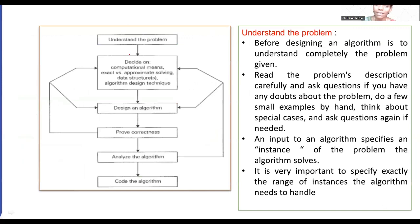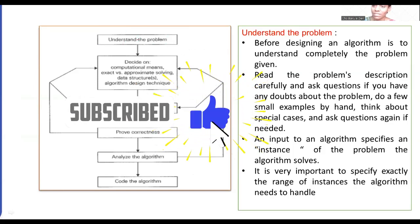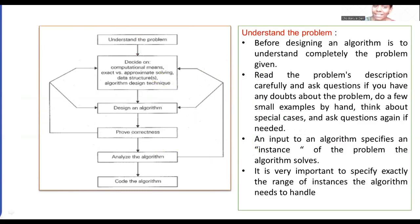Now you can see here the first thing we just discussed is represented in a graphical manner. This is understanding the problem first — it is the initial step we have to do when a problem is given. The next thing is deciding the computational approach, whether exact or approximate. Then we have to know what data structures to use for implementing algorithms and the designing techniques we need to know.